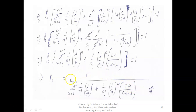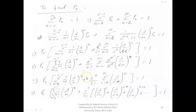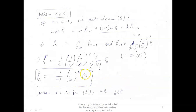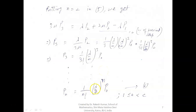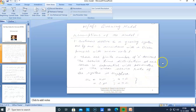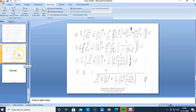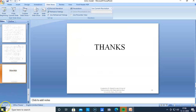So p_0 equals 1 divided by the entire left-hand side expression. Thus we have obtained all the steady-state probabilities of the M/M/C model, including p_0. By substituting this p_0 back into the earlier expressions, all probabilities p_n are uniquely determined. This completes the derivation of the steady-state probabilities of the M/M/C queuing model.